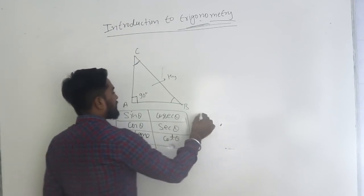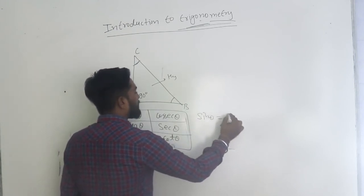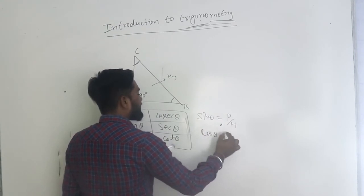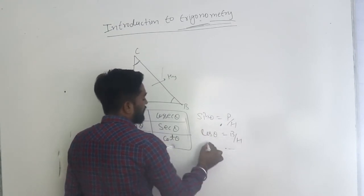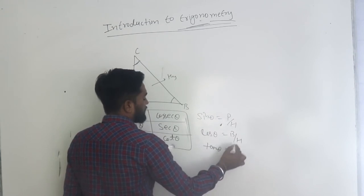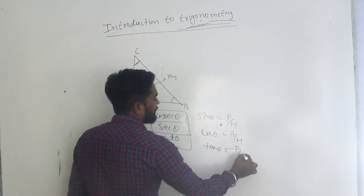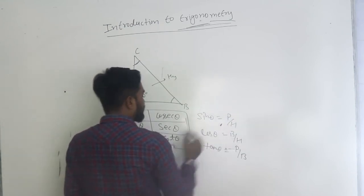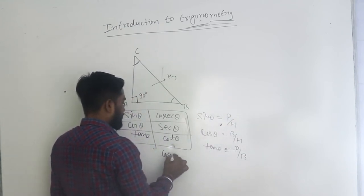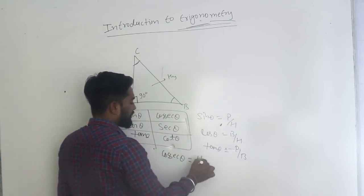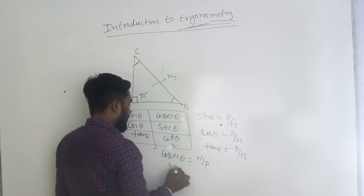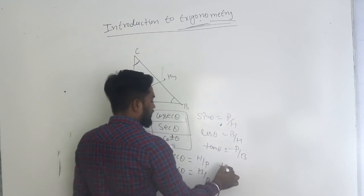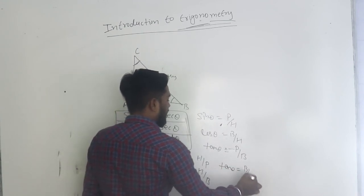Sin theta equals perpendicular upon hypotenuse. Cos theta equals base upon hypotenuse. Tan theta equals perpendicular upon base. Cosec theta equals hypotenuse upon perpendicular. Sec theta equals hypotenuse upon base. Cot theta equals base upon perpendicular.